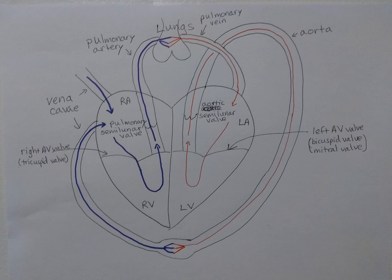On the left side of the heart, oxygenated blood enters the left atrium and flows through the left AV valve — also called the bicuspid or mitral valve — into the left ventricle. When the left ventricle contracts, it opens the aortic semilunar valve and blood flows out into the aorta and out to the body tissues. Gas exchange occurs in the capillaries, and then the deoxygenated blood flows back through the vena cava to the right side of the heart — completing the systemic circuit.